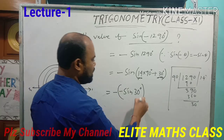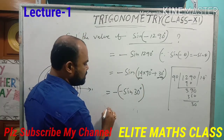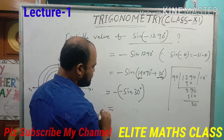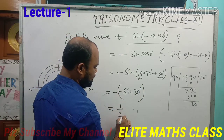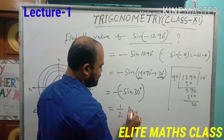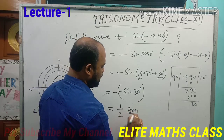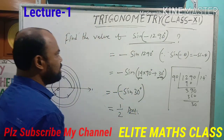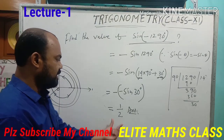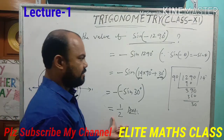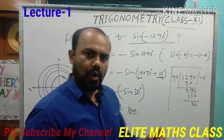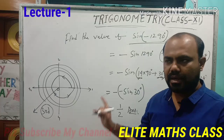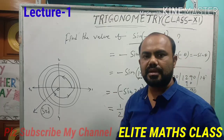So another negative sign will be there. Minus × minus = plus. The value is plus sin(30°). So the value of sin(−1290°) is plus one half. Hope this process is clear.